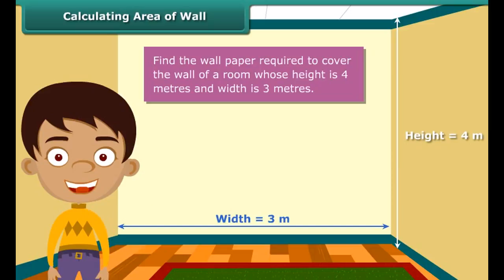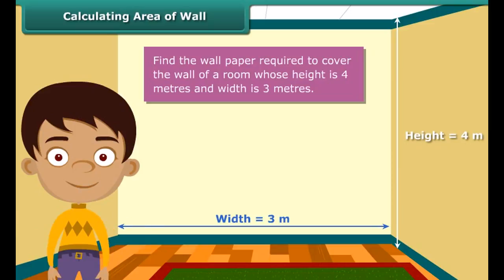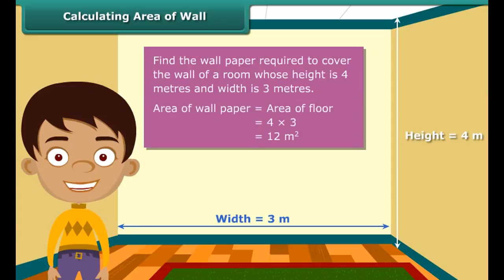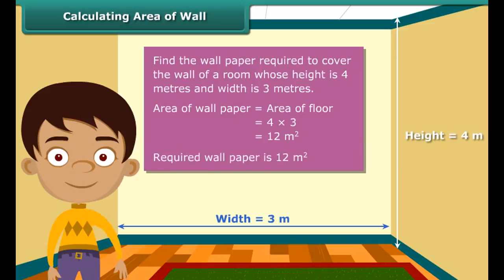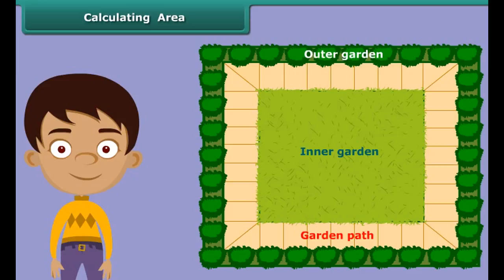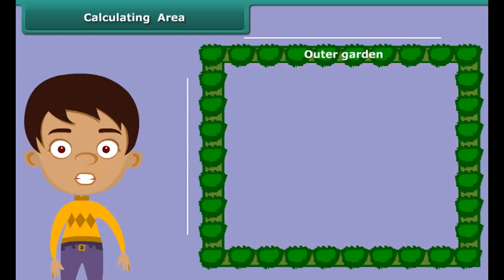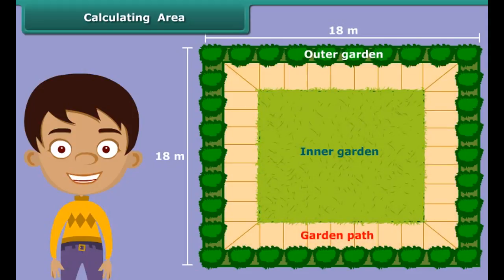Now that we know how to calculate area, let us solve a question based on the concept. Each wall of Nidhi's room is 4 meters high and 3 meters wide. She wants to cover one of the walls with wallpaper and wants to know how many square meters of wallpaper will be required. The area of the wallpaper required will be the same as the area of the wall. The area of the wall is 4 meters multiplied by 3 meters, which is 12 square meters. So 12 square meters of wallpaper will be required to cover the wall of Nidhi's room.